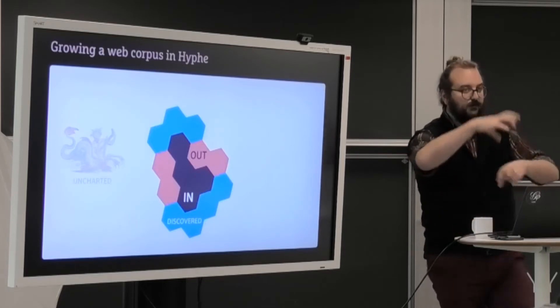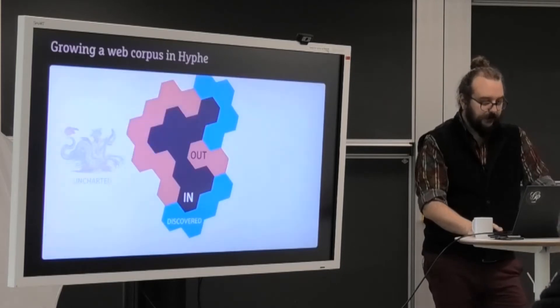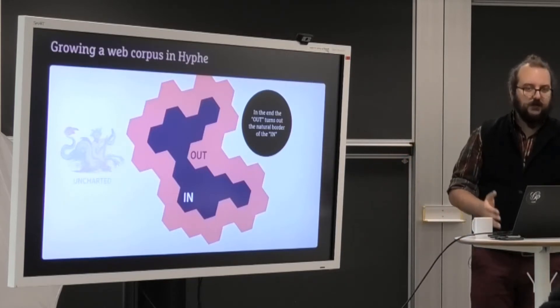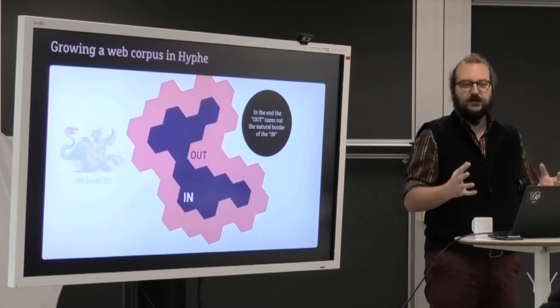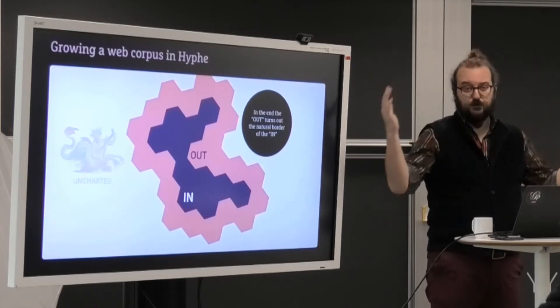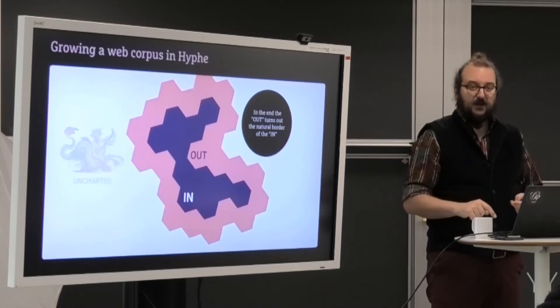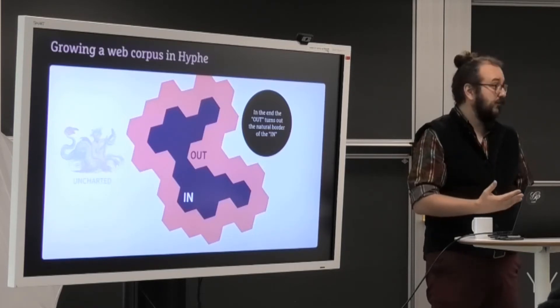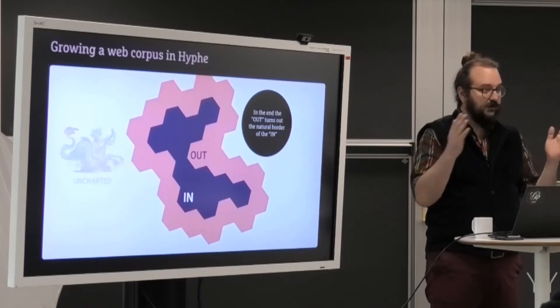So this process goes on and on, and sometimes you put the entity OUT, sometimes you put it IN, and it expands. The corpus will grow in kind of unexpected directions until at some point you've found all the corpus. The important point here is that there is only a finite number of web entities that match your criteria. At some point it stops. Once you have all the IN, any new entity you take a look at in the DISCOVERED becomes OUT.